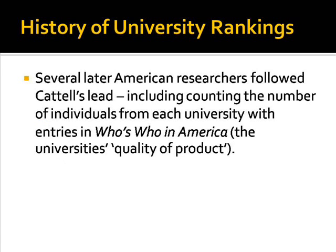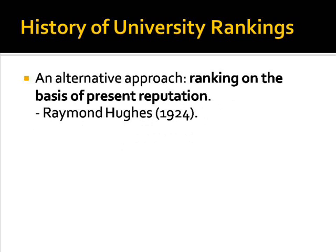Several American academics later developed Cattell's approach. All were concerned with the comparative quality of product produced by various universities, in one case utilizing entries in the successive volumes of Who's Who in America as an alternative measure of eminence. A different approach to rankings was to rate institutions on the basis of their present reputations, rather than the presence of outstanding faculty or the production of eminent graduates.